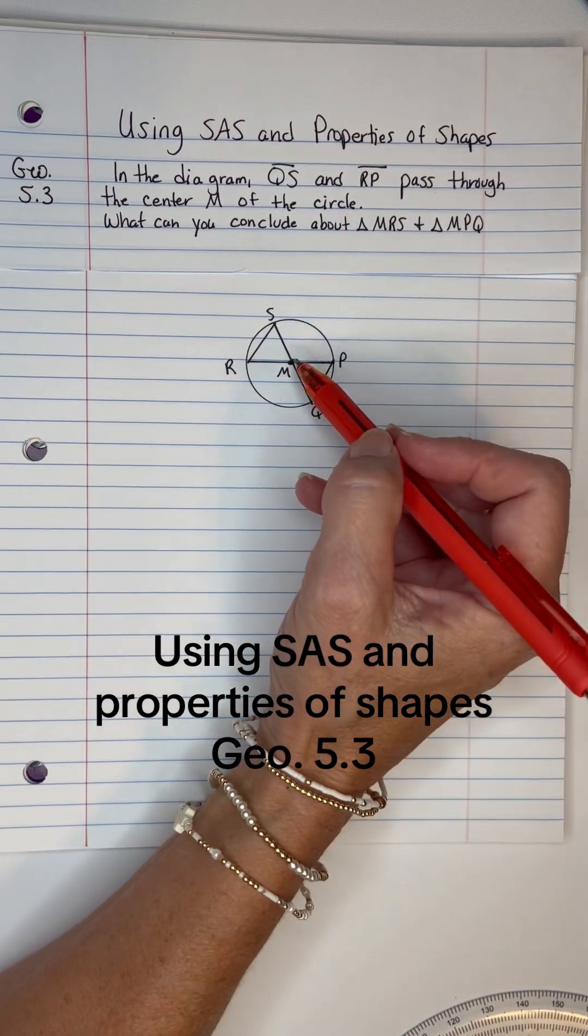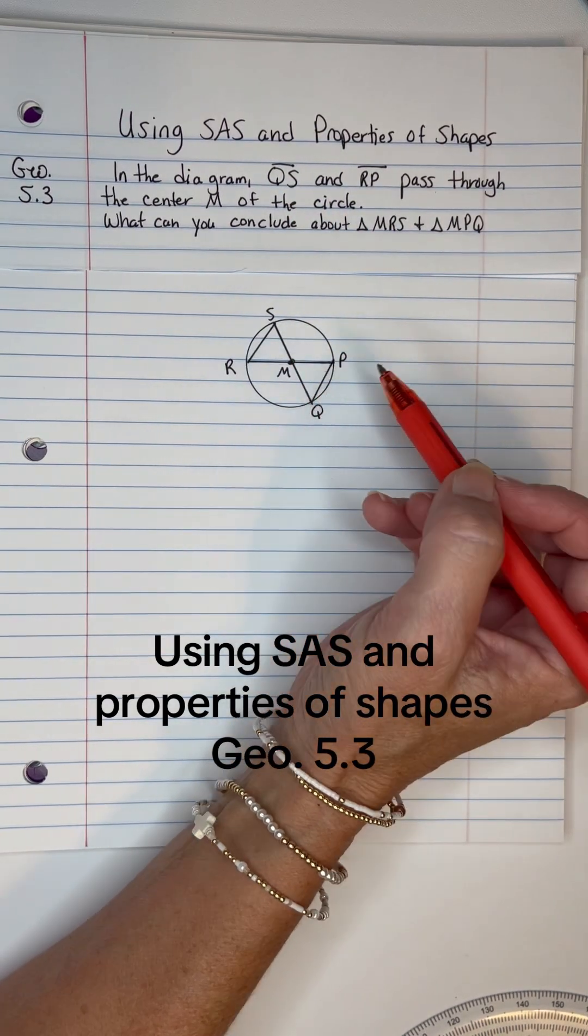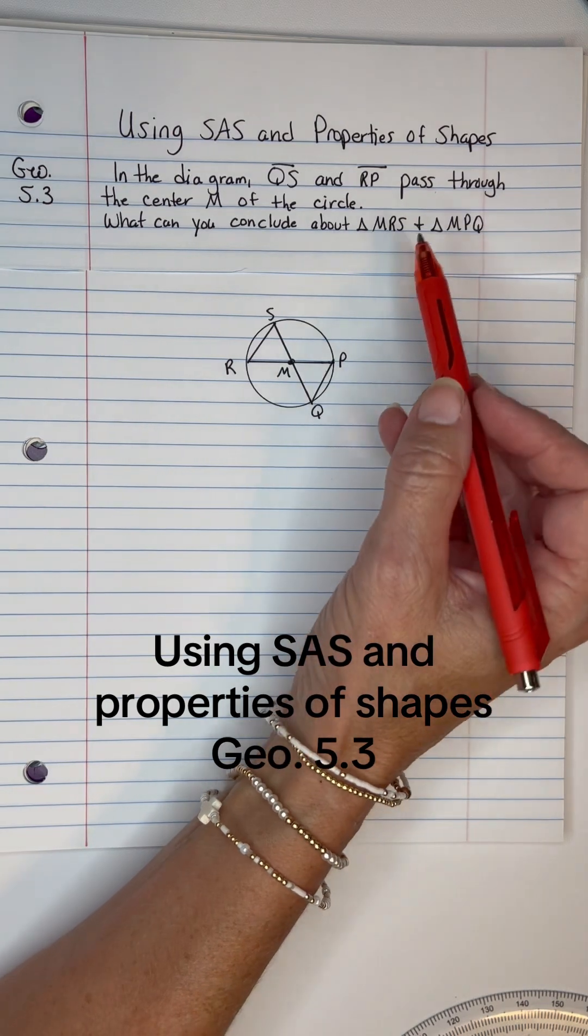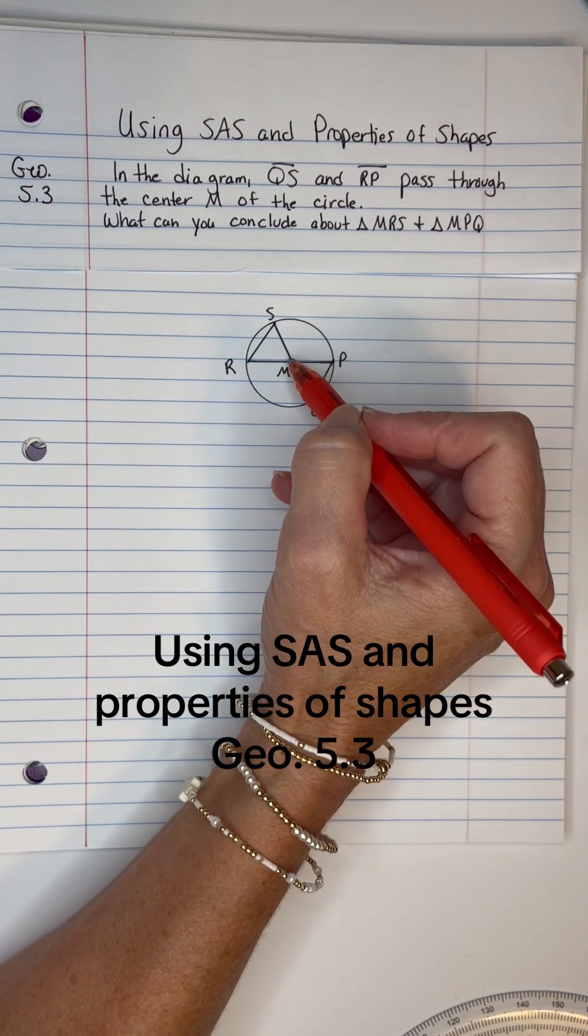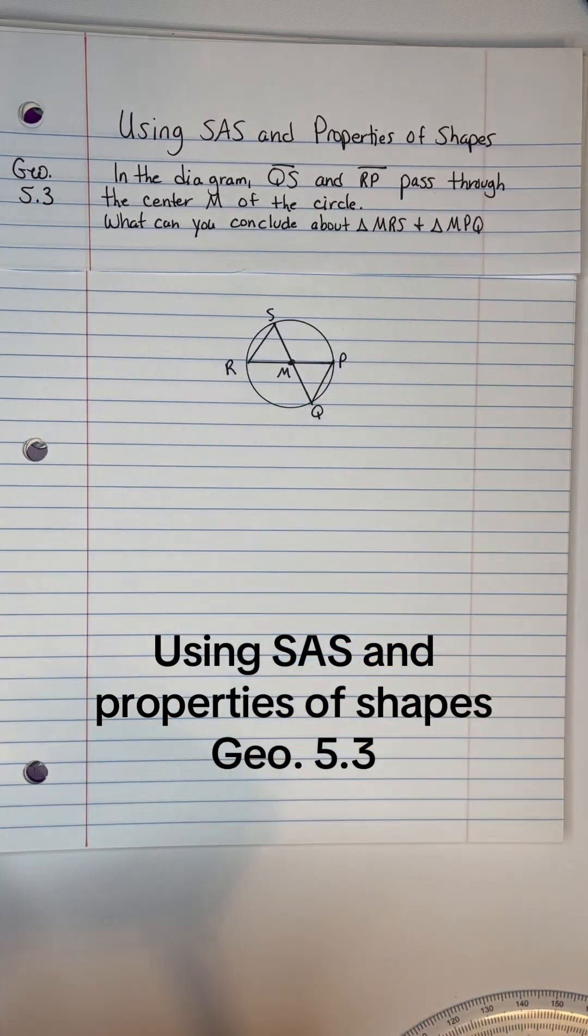So those would be diameters and then these little parts here would all be radii. What can you conclude about triangle MRS and triangle MPQ? Okay, so let's mark up.